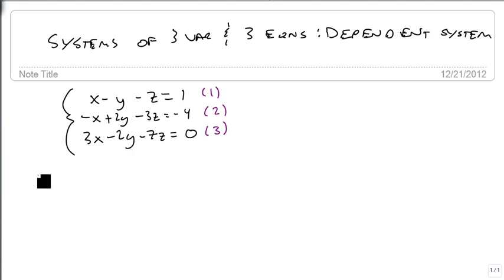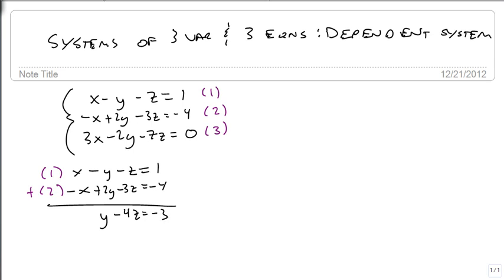So we're just going to start by adding 1 and 2 together to get x minus y minus z equals 1, and minus x plus 2y minus 3z equals minus 4. We add those together. We get y minus 4z equals minus 3. Here's our new equation, 4.